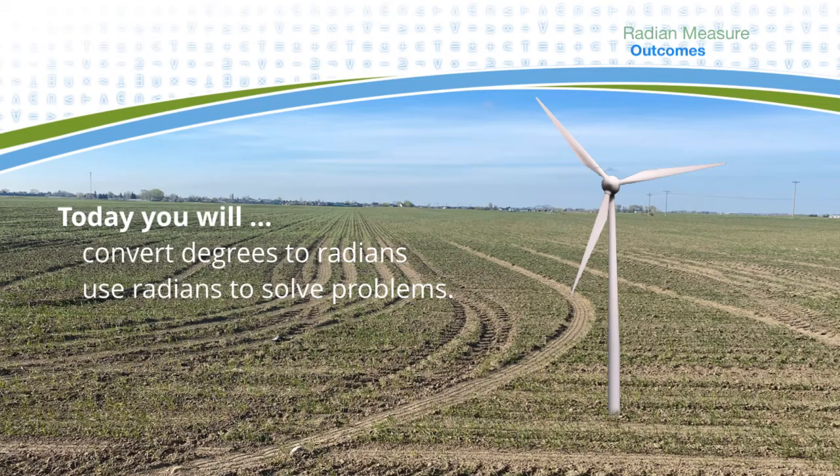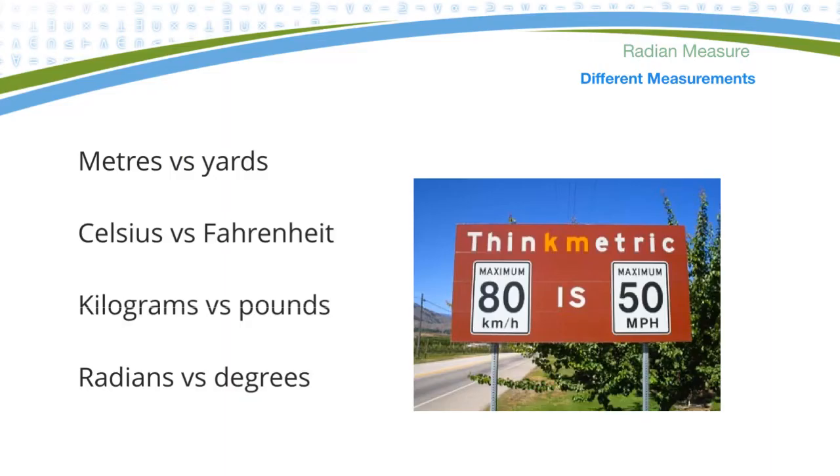In this video, we are looking at radians as another way of measuring rotations or angles. We'll see that there's a few applications of using radians that are quite useful. So we're going to convert degrees to radians first, and then we'll use radians to solve some problems. Just this idea of conversion, you've all done these kind of conversions where there's so many meters in a yard or change Celsius to Fahrenheit, so many kilograms in a pound. Converting from radians to degrees is the same kind of thing. You're just using different units to measure a rotation.